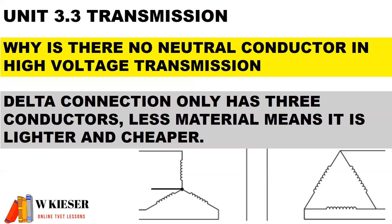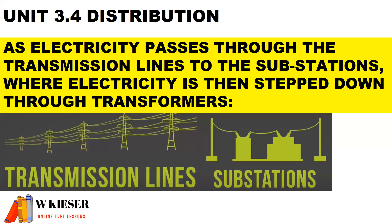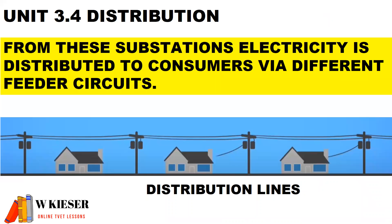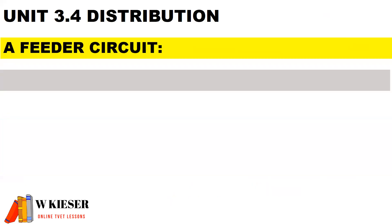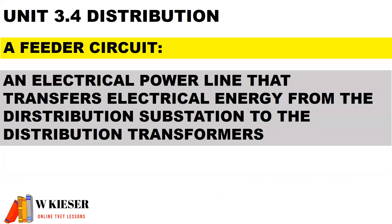For the distribution section, as electricity passes through the transmission lines to the substations, electricity is then stepped down through transformers. From these substations, electricity is distributed to consumers via different feeder circuits. A feeder circuit is an electrical power line that transfers electrical energy from the distribution substation to the distribution transformers.